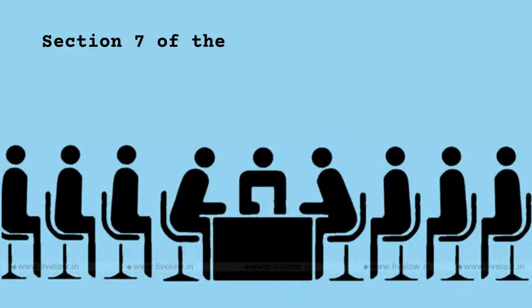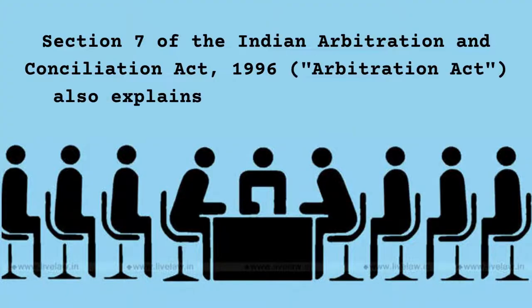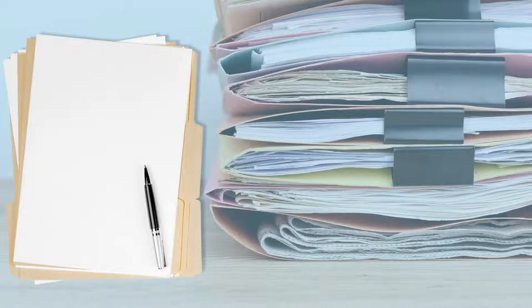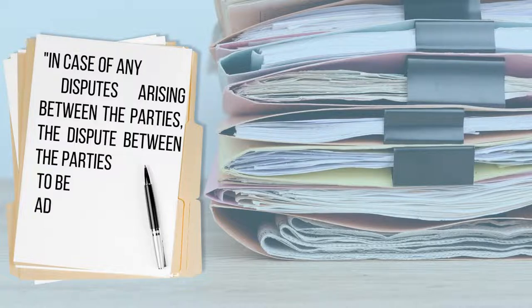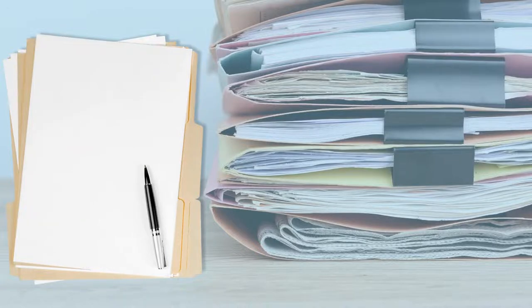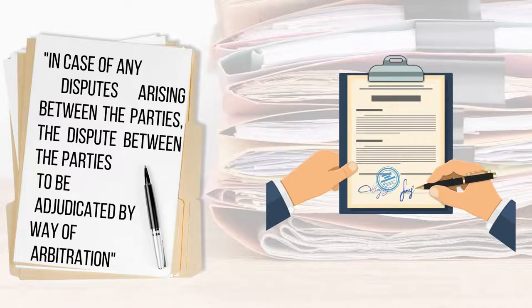Section 7 of the Indian Arbitration and Conciliation Act 1996 explains the arbitration agreement. When two or more parties to a contract have a stipulated clause reading — 'in case of any disputes arising between the parties, the dispute shall be adjudicated by way of arbitration' — it can be construed as an arbitration agreement. Such an agreement is a binding contract, and must be in writing to qualify as an arbitration agreement.